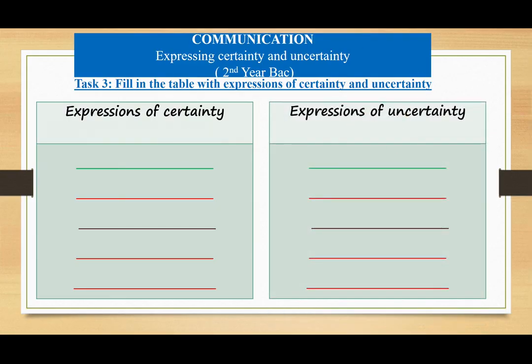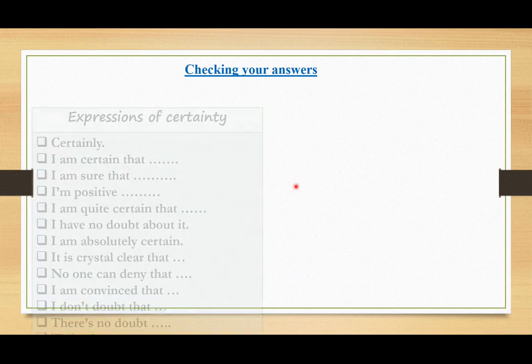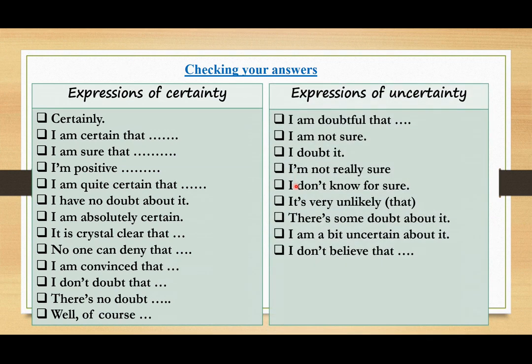What does 'certainly' express? What does 'I'm doubtful about' express? Fill in the table with expressions of certainty and uncertainty. Expressions of certainty: certainly, I'm certain that, I'm sure that, I'm positive that, I'm quite certain that, I have no doubt about, I'm absolutely certain, it is crystal clear that, no one can deny that, I'm convinced that, I don't doubt that, there's no doubt that, and of course.